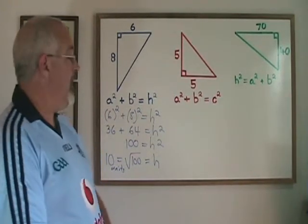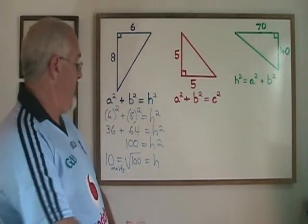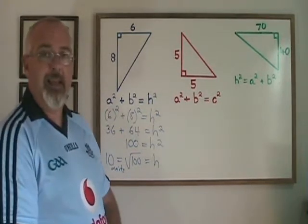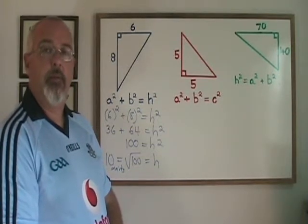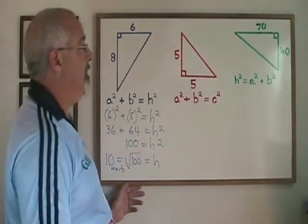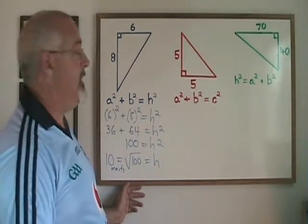Now most right triangles when you use Pythagoras' Theorem will not give you a convenient round number like 10 as the answer. Very often the answer will be a decimal that has to be rounded off. Our second example, the red right triangle, is one of these examples.